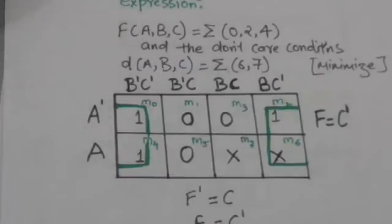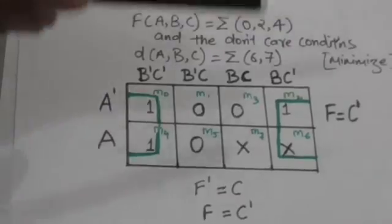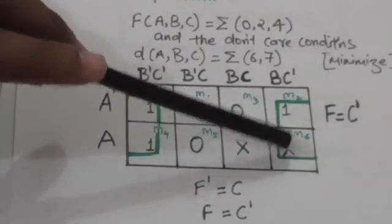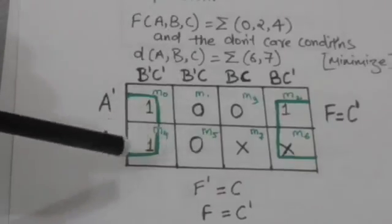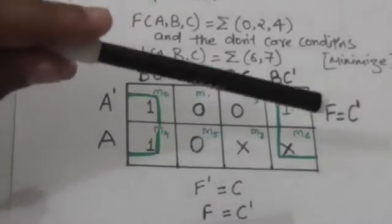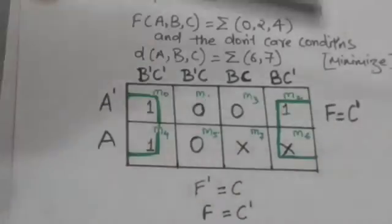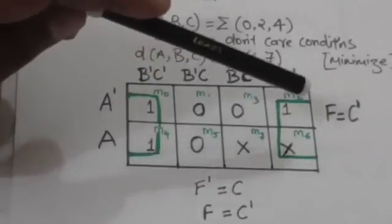Now we have to make groups of adjacent squares. While making the group of adjacent squares, x can be considered as 1 or 0. Here we are making the group of adjacent squares which are marked by 1. We have considered this x as 1 because if we consider it as 1, we will get the simplest expression.